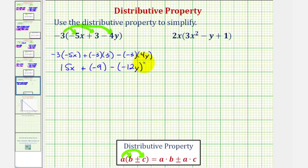So while this is correct, we normally would not leave it in this form. Adding a negative is the same as subtracting a positive, so we could write plus negative nine as just minus nine. And then subtracting a negative is the same as adding a positive, and therefore we can write minus negative 12y as plus 12y. So it's more common to write this as 15x minus nine plus 12y.